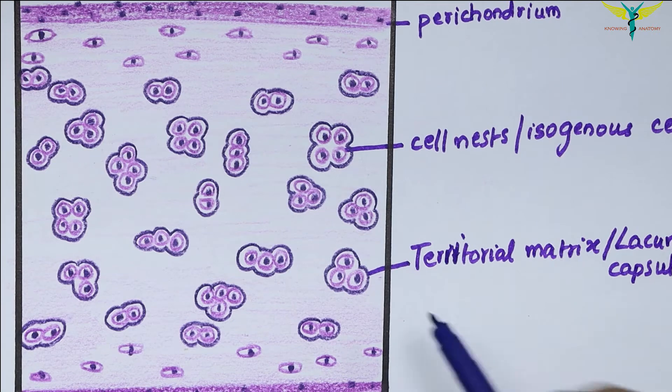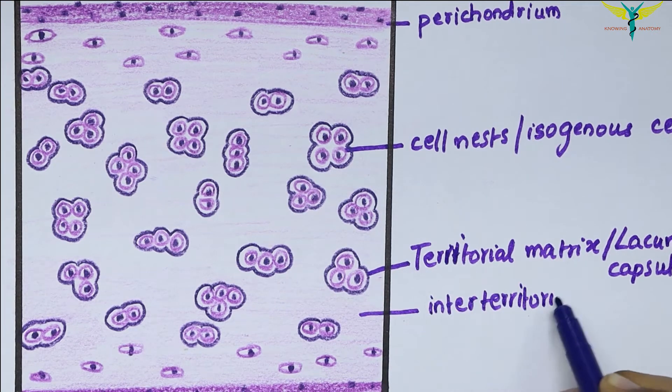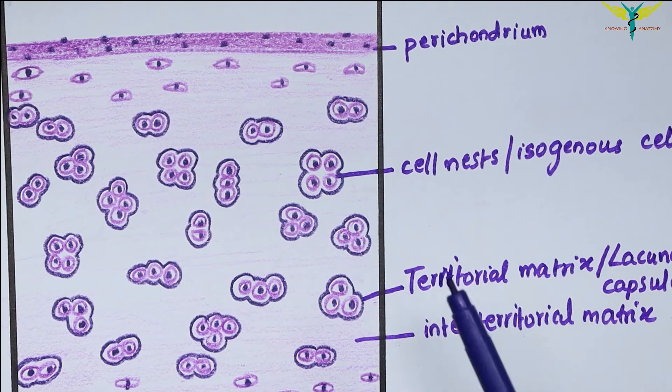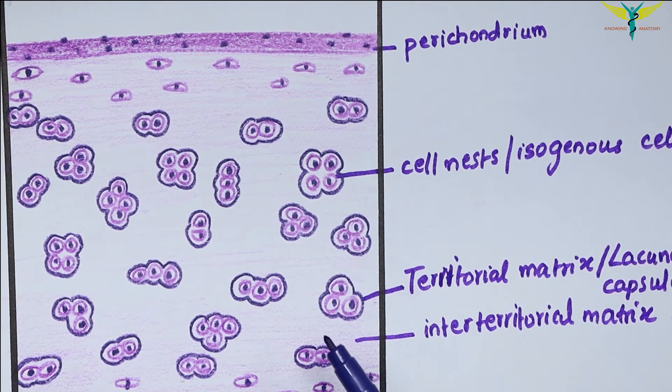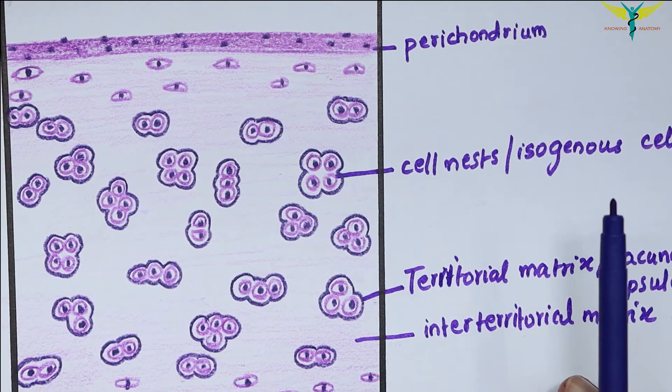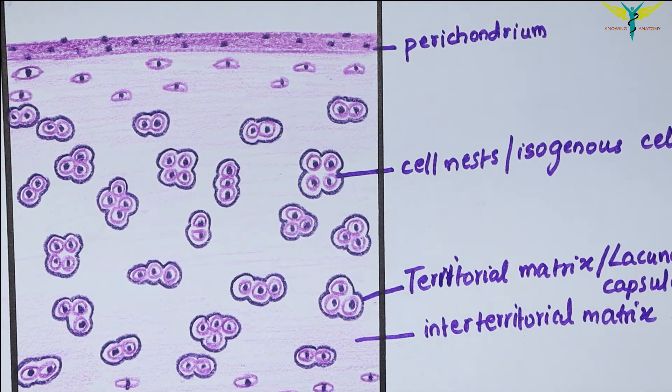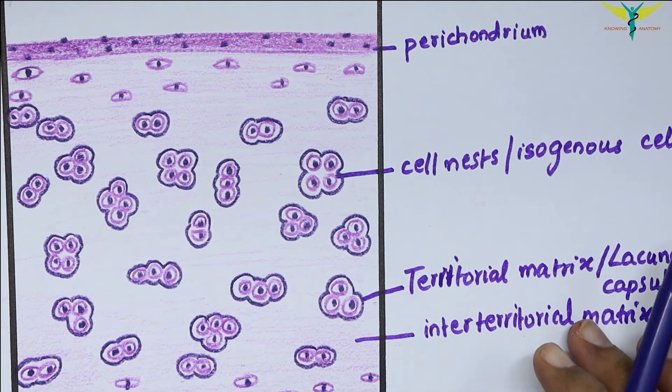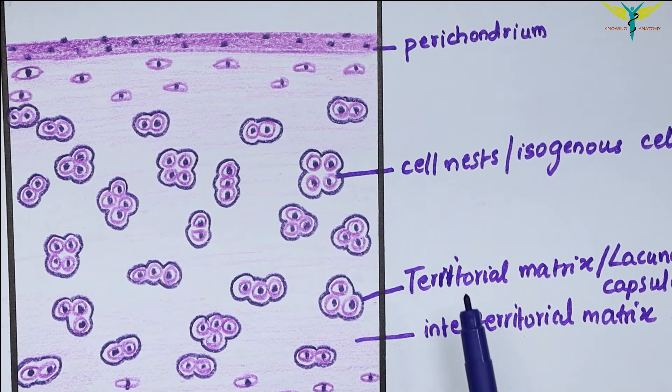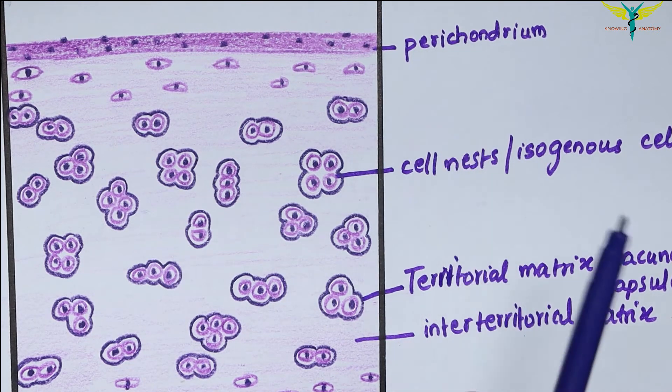The calcification of the hyaline cartilage is often seen in old people, and the coastal cartilage or the large cartilages of the larynx are commonly affected due to calcification. You should remember the elastic cartilage and the fibrocartilage do not undergo calcification; only the hyaline cartilage may undergo calcification.